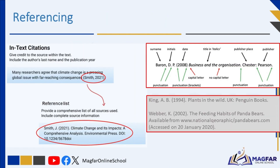Proper referencing is important in all scientific reports. We may use information from a book or article to know the method for testing starch in leaves. In the discussion, we can also compare our results with other scientific reports on similar experiments. When you use background information, it is important to give credit to the sources. In your scientific report, you reference sources in the text by using the author's last name and the year of publication. In-text referencing is a way of acknowledging the sources of information within the body of your written work, and this brief citation directs your reader to the complete source details in the reference list at the end of your document.